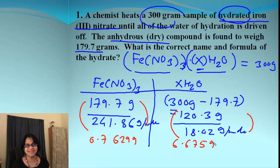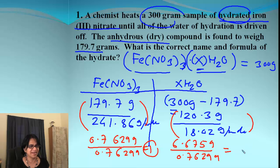When we simplify that we get moles which are 0.76299 and then this is 6.6759. The next step is divide by the smallest. Obviously this is the smallest one. So we divide by that. This is equal to 1 obviously.